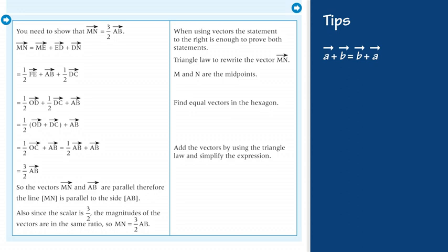So the vectors MN and AB are parallel, therefore the line segment MN is parallel to the line segment AB. Also, since the scalar is 3 divided by 2, the magnitudes of the vectors are in the same ratio. So, MN equals 3 divided by 2 multiplied by AB.